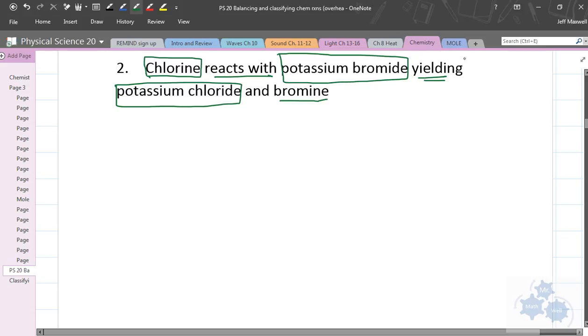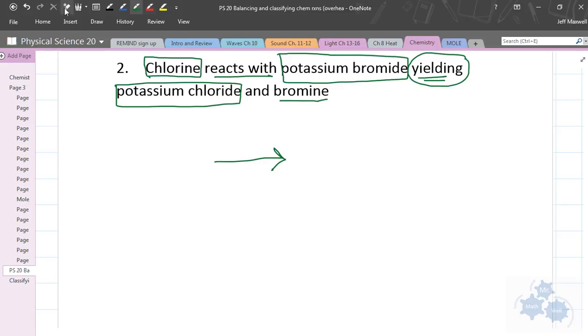This yielding, remember this is one of the words that means, okay, here's the arrow now in the chemical equation. So, we're producing or reacts to form, those kind of words, yields. Potassium chloride and bromine. So, we have two products as well. So, two reactants, two products, right?